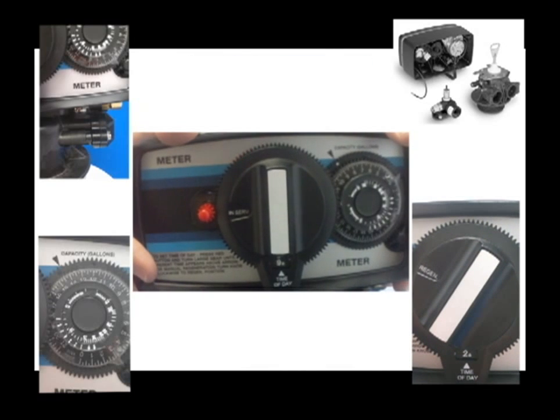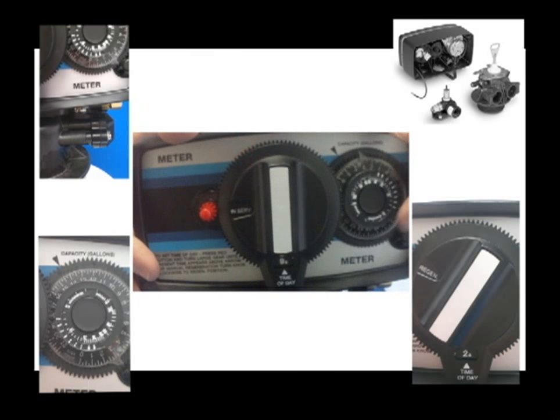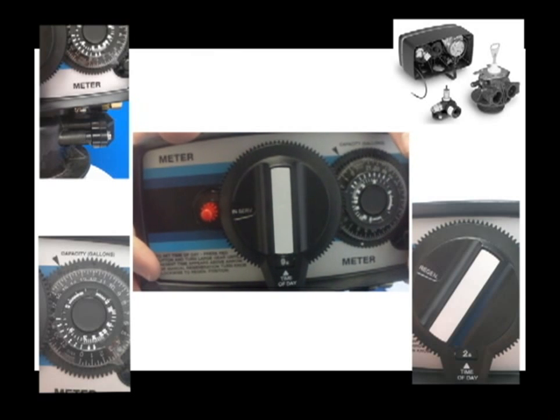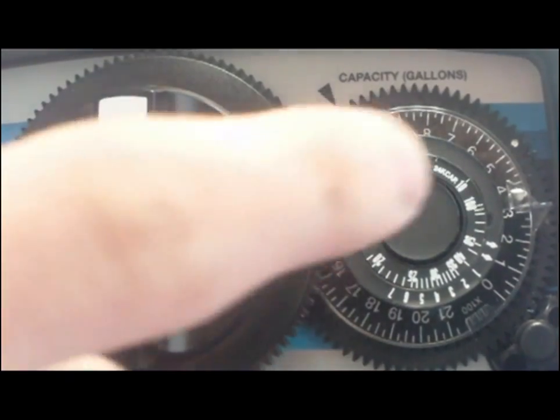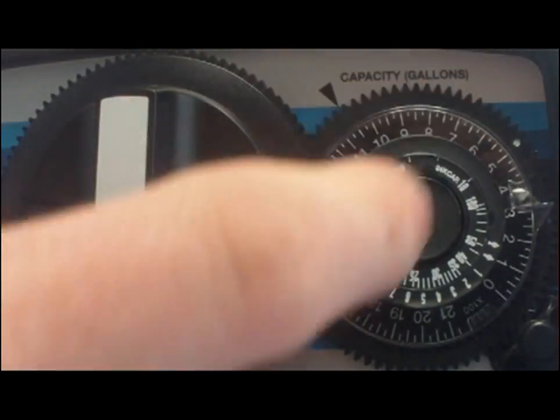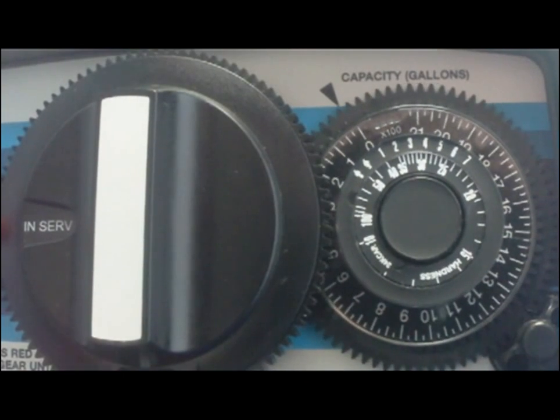There are two ways to set the mechanical timer on a meter valve. The first way is to turn the gallon wheel so the white dot is lined up with the desired amount of gallons before regeneration. For example, if the gallon wheel is on 500 gallons, the system will regenerate after 500 gallons pass through the softener.